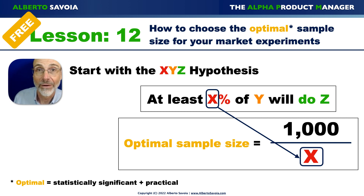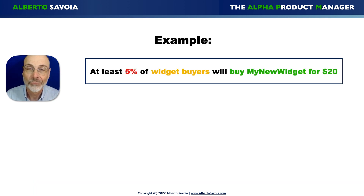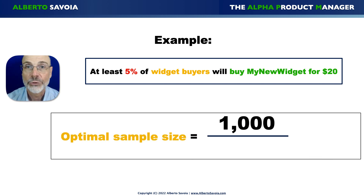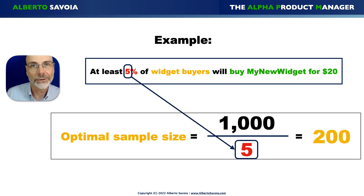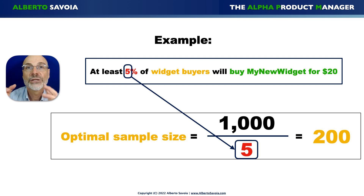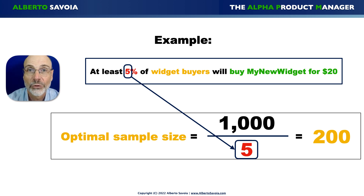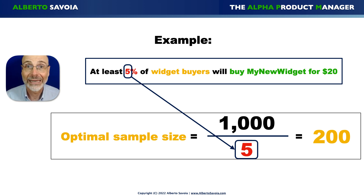That's the formula to remember. Going back to our XYZ hypothesis — at least 5% of widget buyers will buy My New Widget for $20 — your optimal sample size is 1,000 divided by 5, which equals 200. So if you expect about 5% of people to buy your product, you need to run your market experiments with prototypes using 200 people, give or take. Do that and you will have a statistically significant and practical experiment.